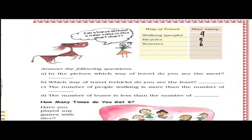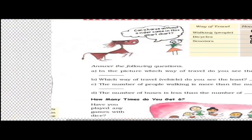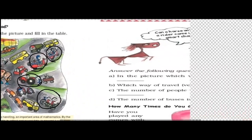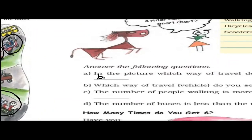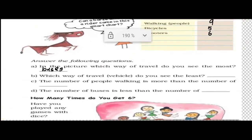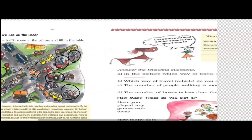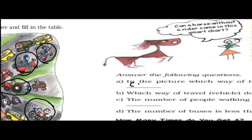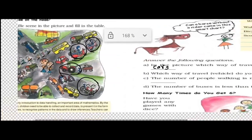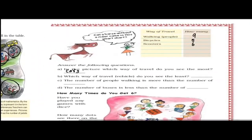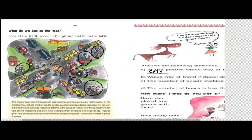Now, answer the following questions from the picture. Which way of travel do you see the most? You can see that buses — 1, 2, 3, 4 buses are there — or you can write cars, because cars are mostly used by the people to travel. Which way of travel do you see the least? You can see bullock carts — there is only one bullock cart. So we can write bullock cart.